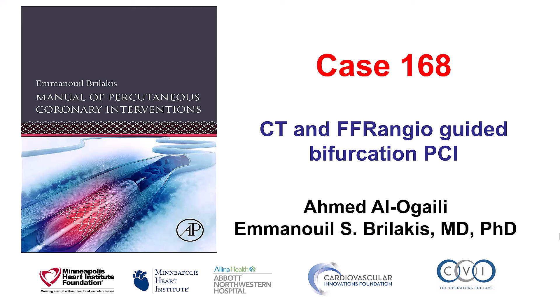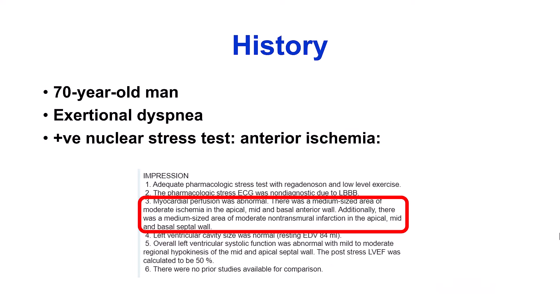Hi, this is Ahmed Alokaili and Manos Brilakis presenting case 168 for the Manual of Percutaneous Coronary Interventions. This is a case illustrating use of coronary computed tomography as well as FFR angio for guiding bifurcation PCI. The patient was a 70-year-old gentleman who presented with exertional dyspnea and was found to have anterior ischemia on a nuclear stress test.